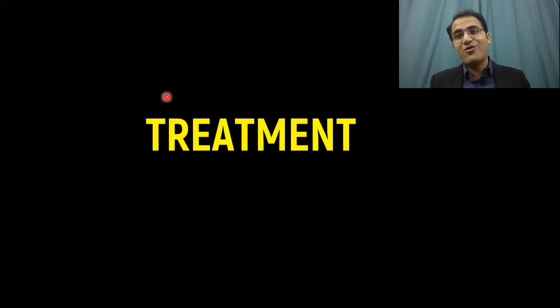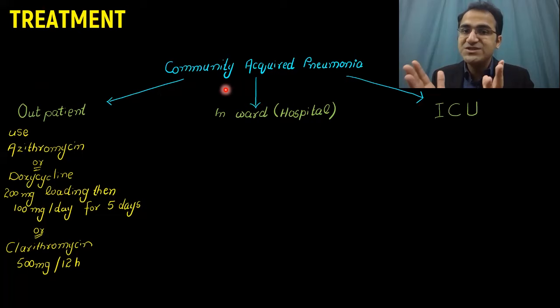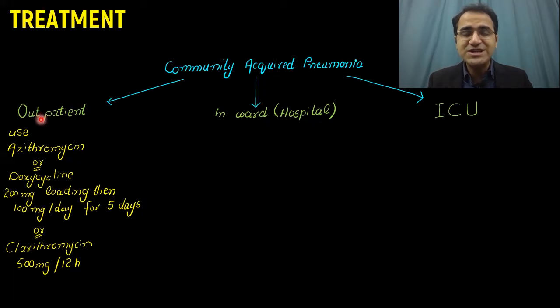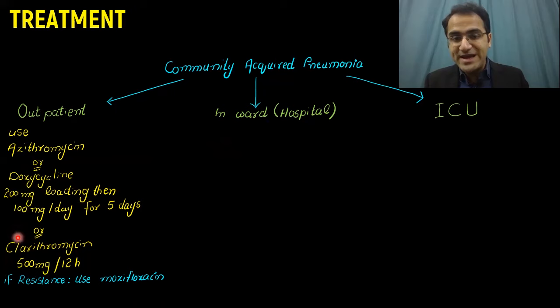For treatment of community-acquired pneumonia: if the patient has a CURB-65 score of 0 or 1, they have mild pneumonia and can be treated as an outpatient sent home with medications. You can treat with azithromycin, or doxycycline 200 mg loading dose then 100 mg per day for 5 days, or clarithromycin in BD dosage. If there is known resistance, use moxifloxacin, a respiratory fluoroquinolone. For a CURB-65 score of 2–3, the patient must be admitted to hospital.